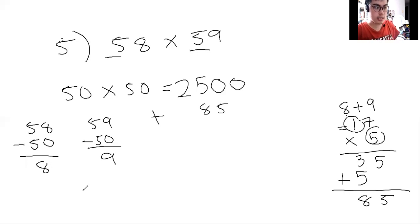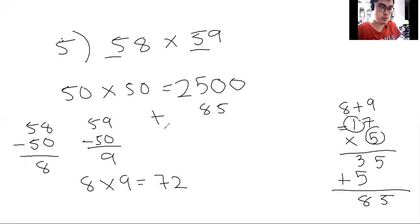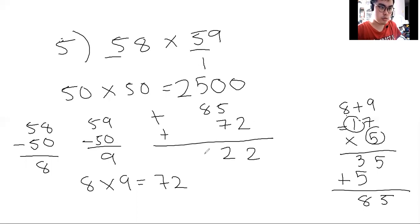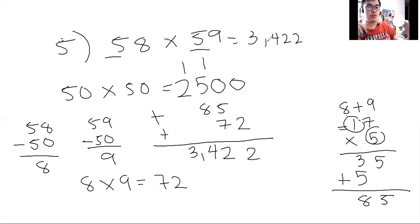Then 8 times 9 for the ones digit is 72. Adding them all together, our answer is 3,422. Thank you guys! Happy learning. Don't forget to hit the subscribe button. Thank you and God bless.